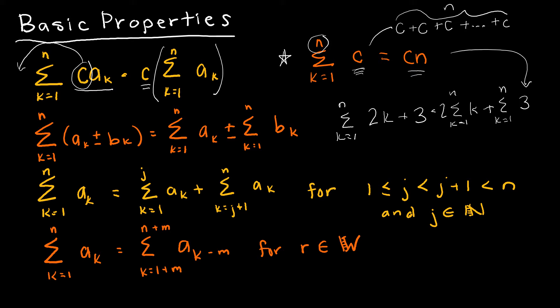The next property says if I have the summation of some sequence, I can split the sequence into two parts, as long as those two parts cover the entire limit, from lower limit to upper limit. So if I start at 1 and go to some integer j, and then in my next one I go from the very next integer up to n, you're going from your lower limit to upper limit, and j is between those two values, and j plus 1 is between those two values.